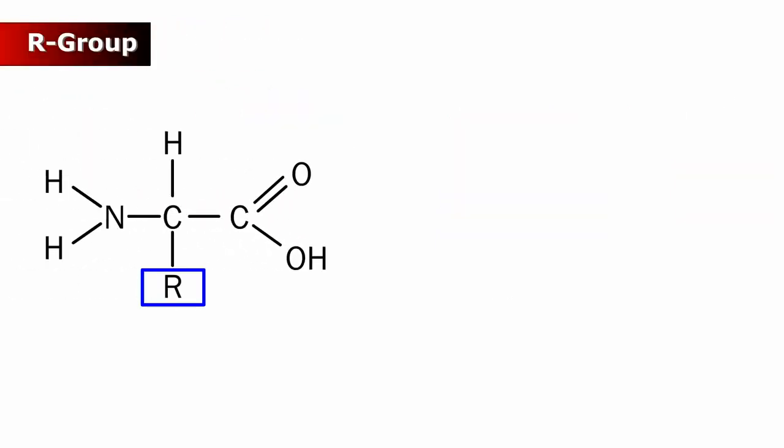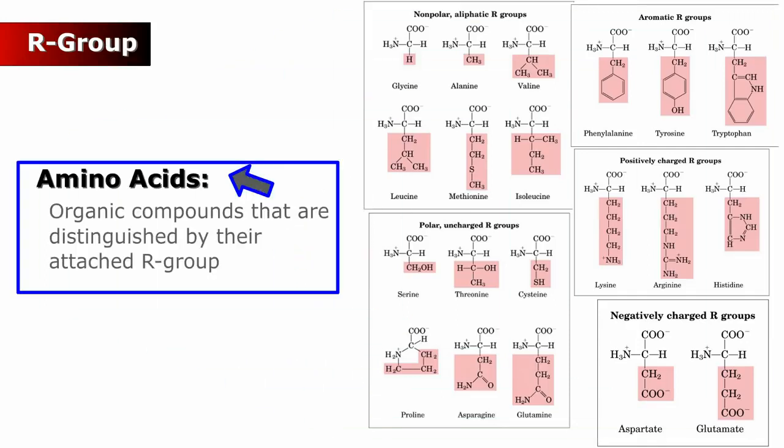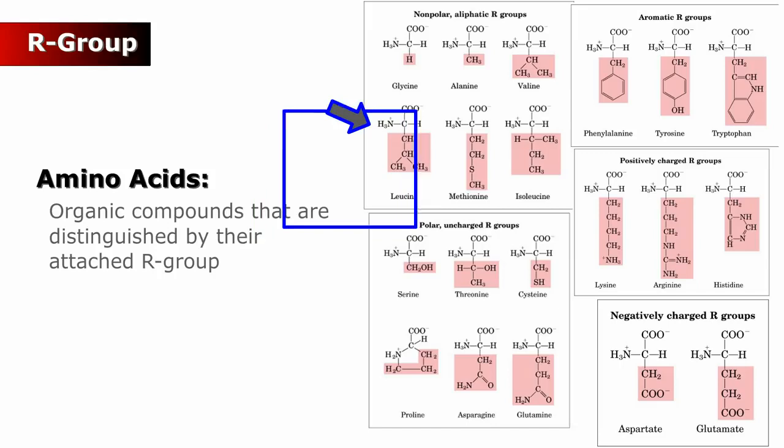Differences in the R group identify the various amino acids. Amino acids are organic compounds that are distinguished by their attached R group.